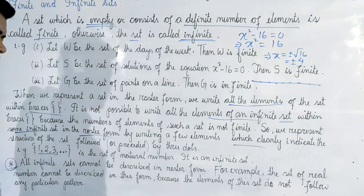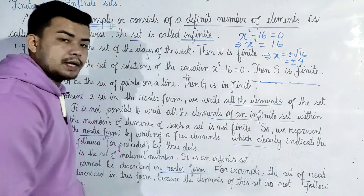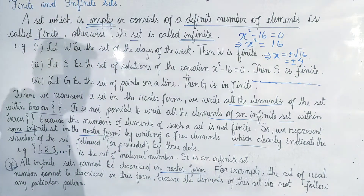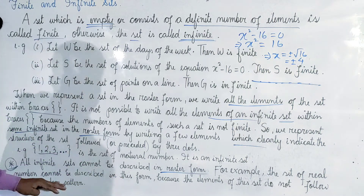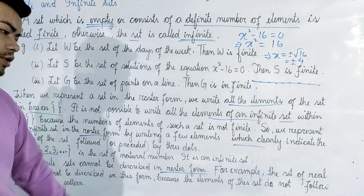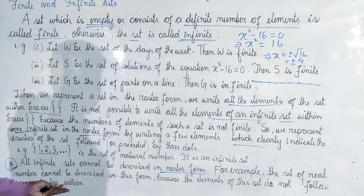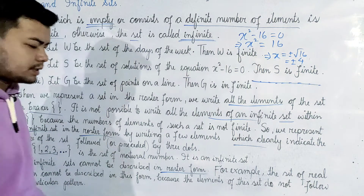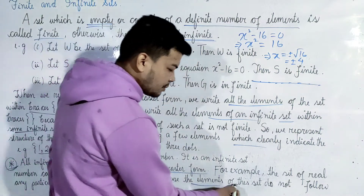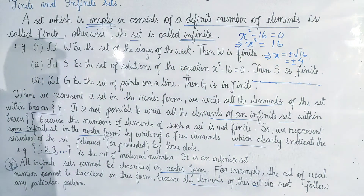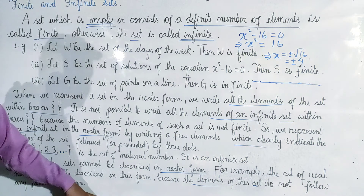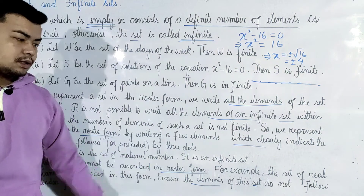The set of real numbers is an infinite set. Because the elements of the set do not follow any particular pattern, it should be described accordingly as an infinite set.